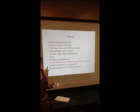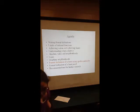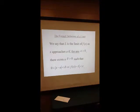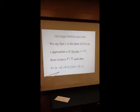So now we understand absolute value notation, neighborhoods, graphing neighborhoods, and logic, so we can approach the formal definition of a limit. L is the limit of f of x as x approaches A if, for any value of epsilon greater than 0, there exists a value of delta greater than 0 such that the deleted delta-neighborhood of A maps into the epsilon-neighborhood of L.